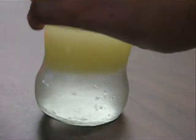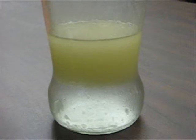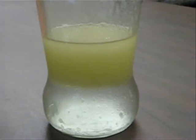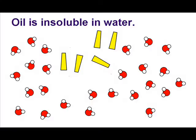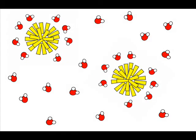Some things are insoluble in water. Oil is insoluble in water. The oil particles clump together, get surrounded by water, and rise to the surface. They do not mix with the water.